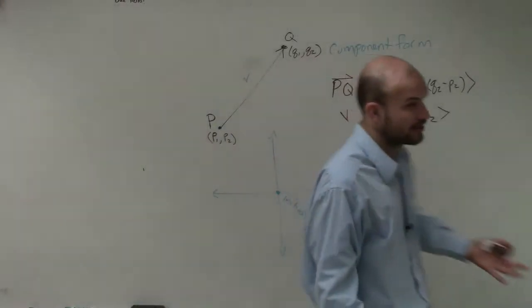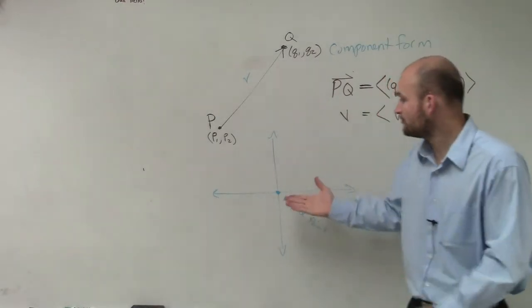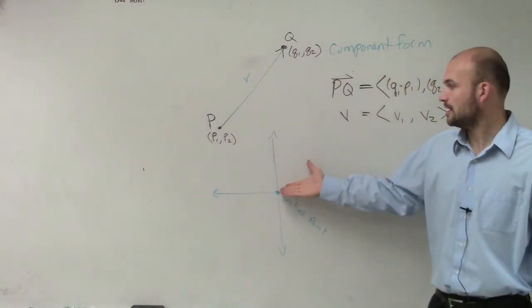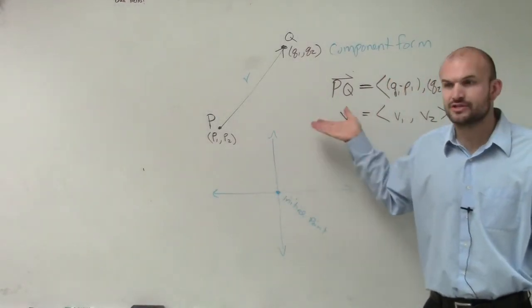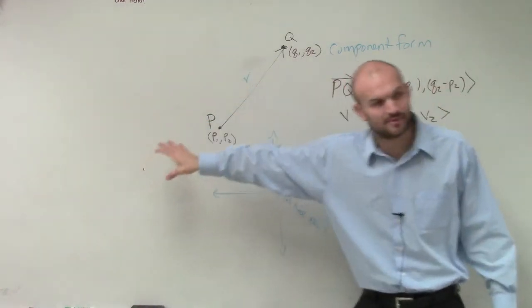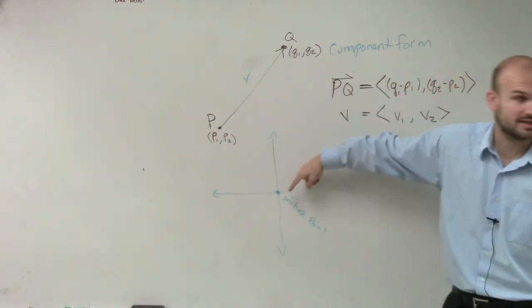And again, this is dealing with your component form. We talked about component form - that's going to standardize our direction of vectors. Rather than having eight different vectors up here, all the vectors are going to go on the initial point.